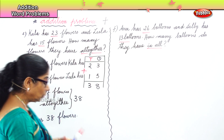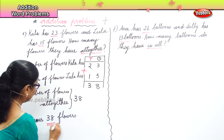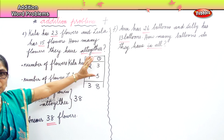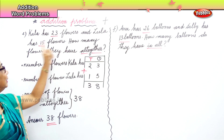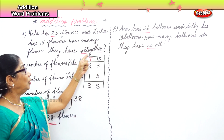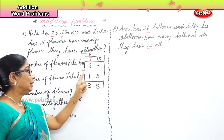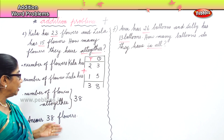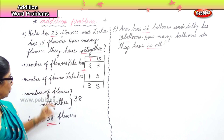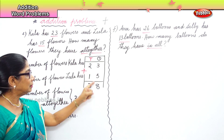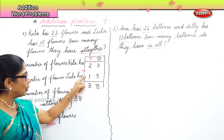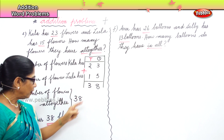The answer is 38 flowers. Look at it once again: number of flowers Kala has is 23, number of flowers Leela has is 15. Altogether means addition — therefore number of flowers altogether: 5 ones plus 3 ones is 8 ones, 2 tens plus 1 ten is 3 tens, so 38 flowers.